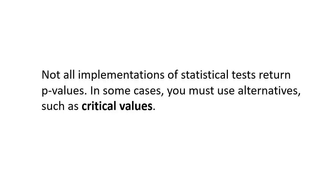It's common to interpret the results of statistical hypothesis tests using p-values, but not all implementations return p-values — in some cases you might use a critical value instead. Critical values are also used when estimating expected intervals for observations from a population, such as tolerance intervals. A statistic calculated by a statistical hypothesis test can be interpreted using critical values from the distribution of test statistics. Examples of statistical hypothesis tests and their distributions from which critical values can be calculated are z-tests, Student's t-tests, chi-squared tests, and ANOVAs.